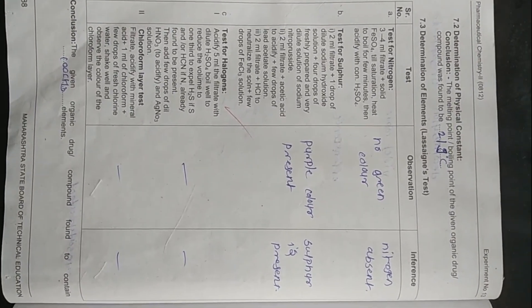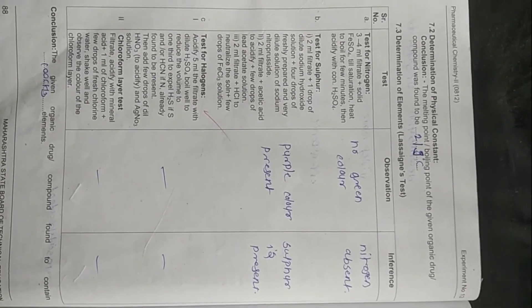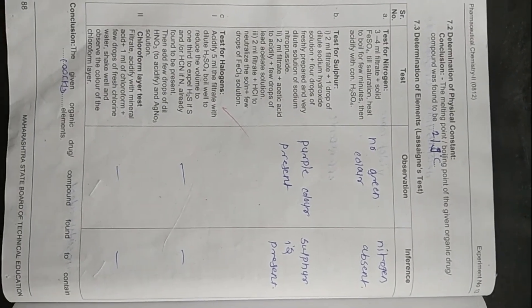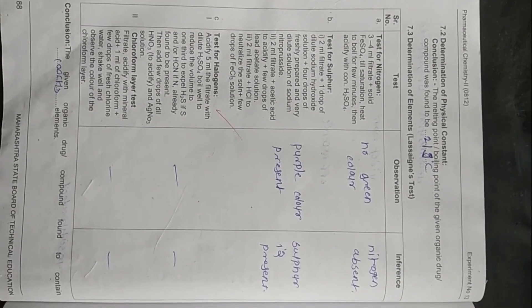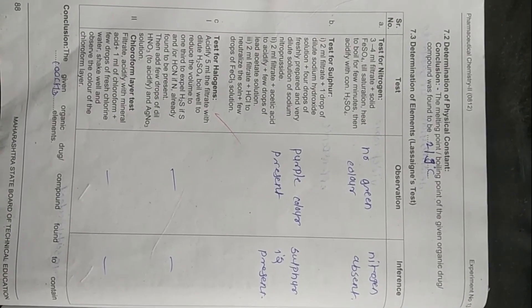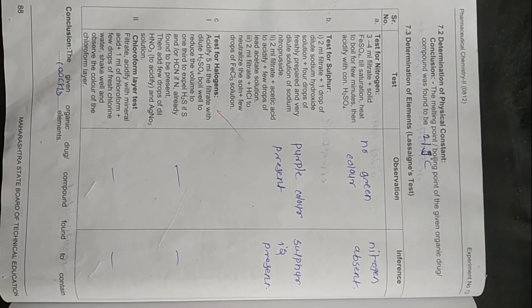There is a test called the Lassaigne test. In the Lassaigne test, we test for nitrogen, test for sulfur, and test for halogen.